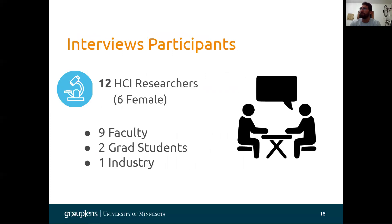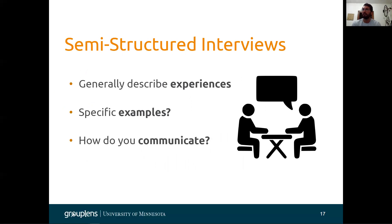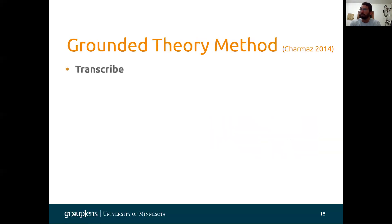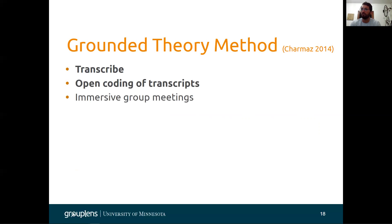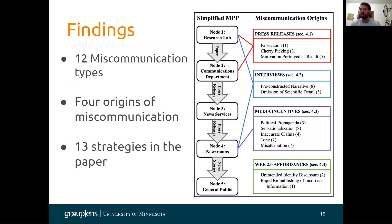We interviewed 12 participants — nine faculty, two graduate students, and one industry professional. We conducted semi-structured interviews in which participants described their experiences with media professionals and provided specific examples. We asked about the challenges, tools, and strategies related to current and future interactions with media professionals. To analyze the data, we used a grounded theory approach: we transcribed the data, open coded the transcripts, engaged in immersive groupings using affinity maps, and then developed a codebook of themes. Our findings were 12 miscommunication types, four origins, and 13 strategies.